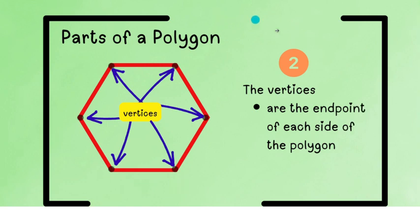Next, number two, we have vertices. Tinatawag natin vertices kung marami. Kung more than one ang vertex. Pero, pag-iisa lang, vertex ang tawag natin dito. Pero, kung madami sila, vertices. So, what are vertices? They are endpoints of each side of the polygon.